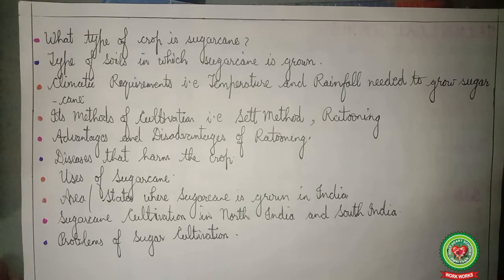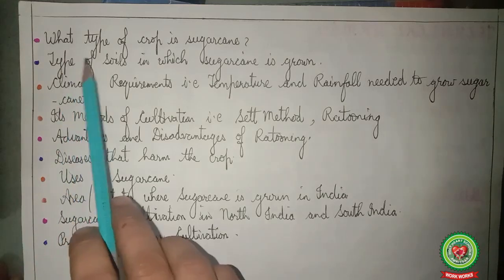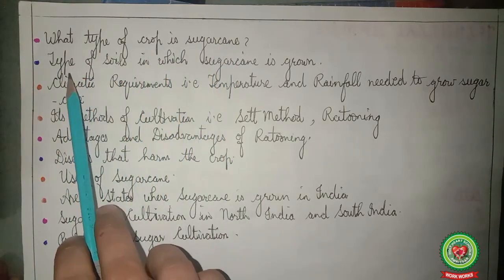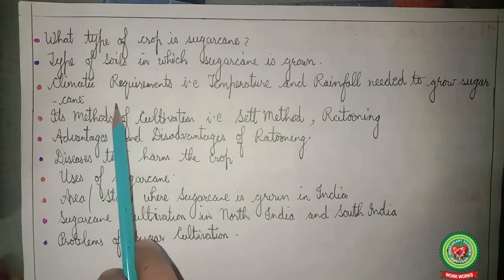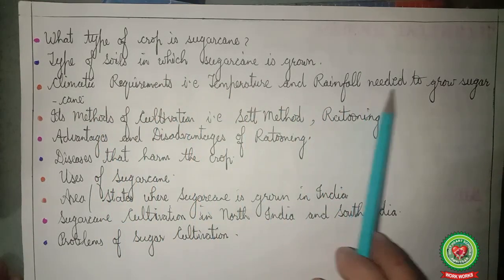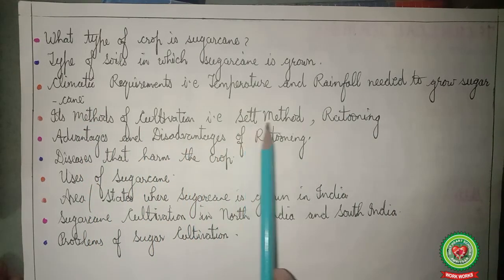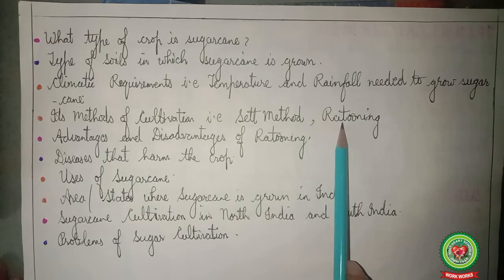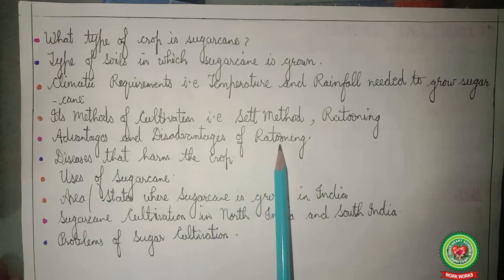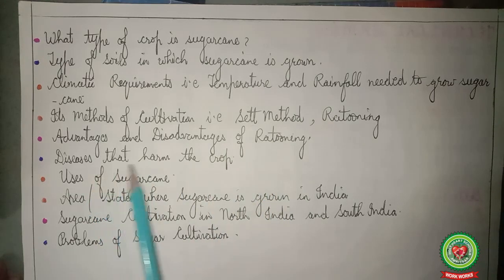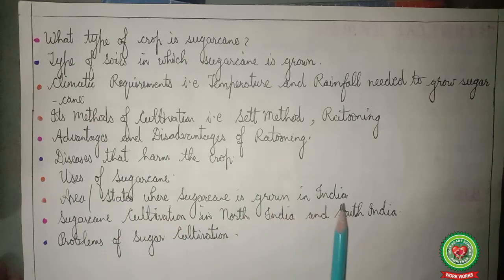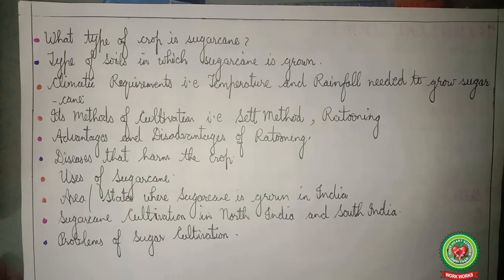Through this video we have learned what type of crop sugarcane is, the type of soil in which it is grown, its climatic requirements — temperature and rainfall — its methods of cultivation including set method and ratooning, advantages and disadvantages of ratooning, diseases that harm the crop, uses of sugarcane, area states where sugarcane is grown in India, sugarcane cultivation in North and South India, and the problems of sugarcane cultivation. Thank you.